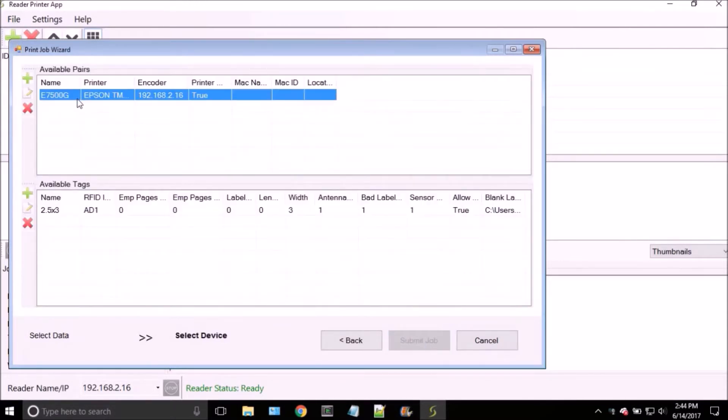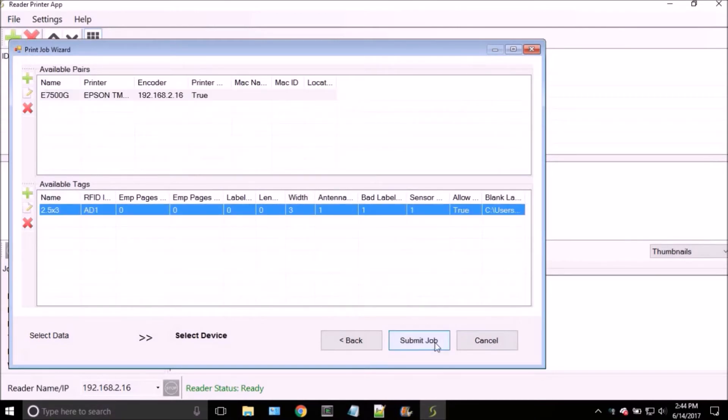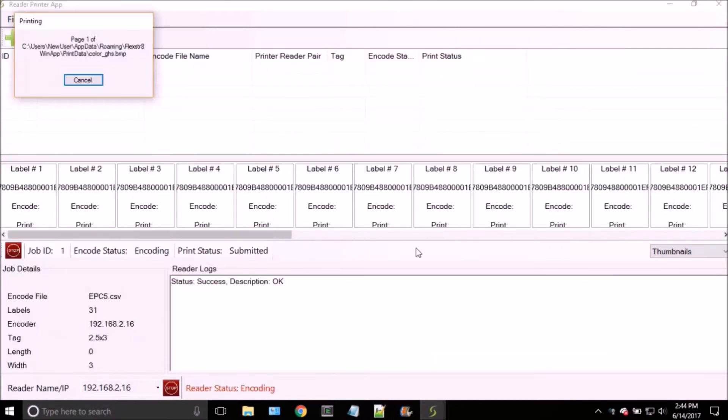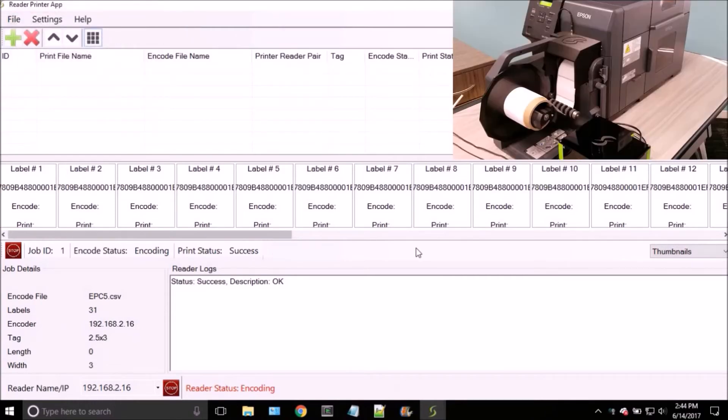Step 2: Select the printer to send the job to and the type of RFID label being encoded. Once the job has been submitted, it will be queued and managed on this screen.